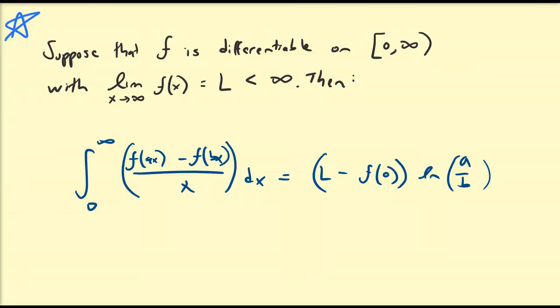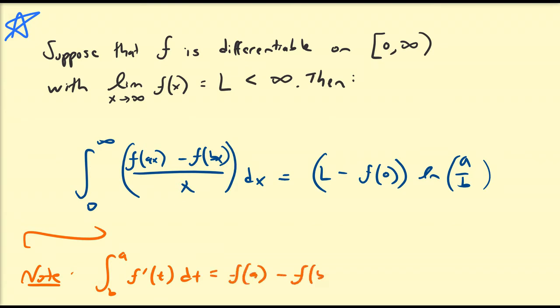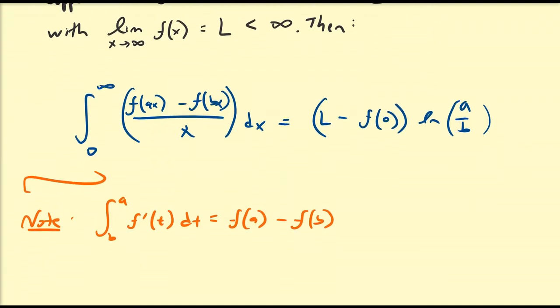Let's start off with a proof of this Frullani integral representation. I'll begin by mentioning a couple things we should know, namely the fundamental theorem of calculus: the integral from b to a of f'(t) dt is equal to f(a) minus f(b), where f is the antiderivative of f'. I'm writing it as the integral from b to a rather than a to b for reasons I'll mention in just a moment.